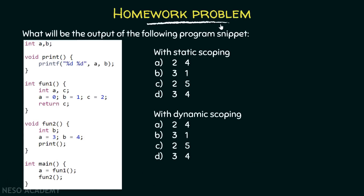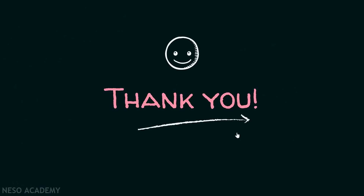Here is one homework problem for you: what will be the output of the following program snippet? You need to determine the output of this program with static scoping and with dynamic scoping. You are always welcome to post your answers in the comment section below. Thank you for watching this presentation.